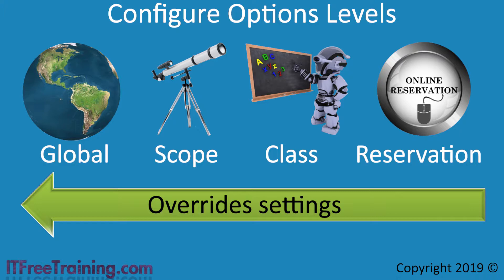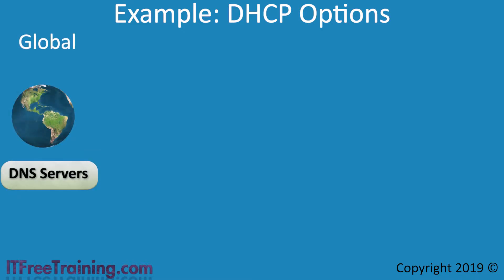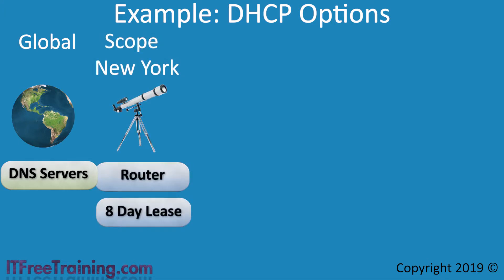A lot of networks will have a simple setup for DHCP, but to understand how it works, let's consider a complex DHCP example using all four levels of options. To start with, let's consider that on this network there are two DNS servers. These are used on all networks in the company, so these will be configured as global options. A scope will be created for the New York network, containing the default gateway and the lease configured for 8 days. It is common to configure a router in the scope since most networks generally only have one.